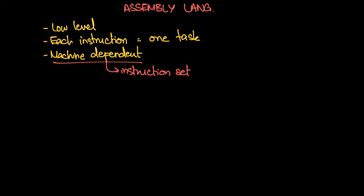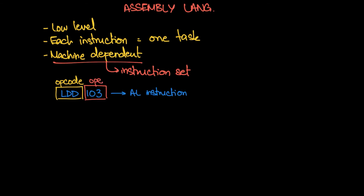Let's take a look at what an assembly language instruction actually looks like. Let's say we have an instruction like LDD 103. This is what a typical assembly language instruction looks like. It has two parts: the first part, 'LDD', is known as the op code, and the second part, '103', is the operand. These two parts work together to tell the computer exactly what to do.